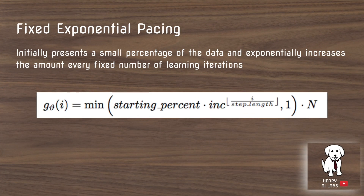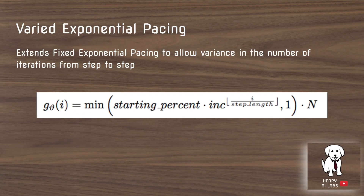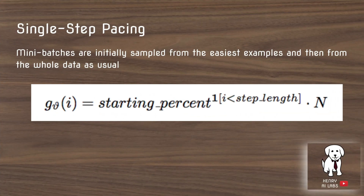The first is fixed exponential scaling, where they start with a small percentage of the data and then exponentially increase it over a fixed number of iterations — for example, starting with 10 samples, adding 20 after 10 iterations, then 40 after 10 more, then 160 after another 10. Varied exponential pacing is the same idea, except the step-to-step iterations are allowed to change, adding an additional hyperparameter. Single-step pacing is the simplest: sample from the easiest examples first, then switch to the whole dataset.